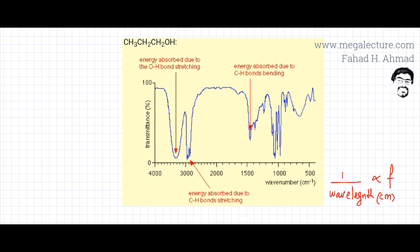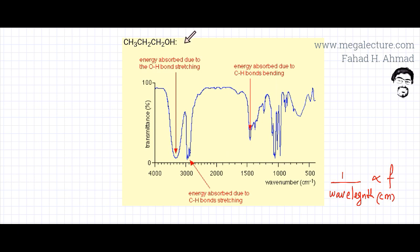So different frequencies are being transmitted. The y-axis is transmittance. If transmittance is 100%, that means these frequencies are not absorbed by the molecule. The molecule propan-1-ol has different bonds, and these different bonds would be stretching, contracting, and vibrating to absorb different frequencies from the infrared spectrum. 100% transmittance means these waves or frequencies are not absorbed.